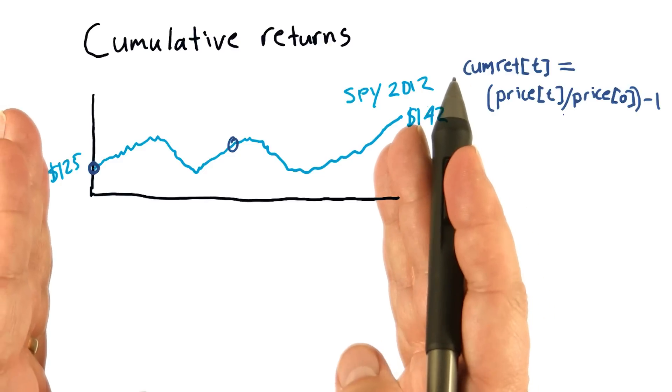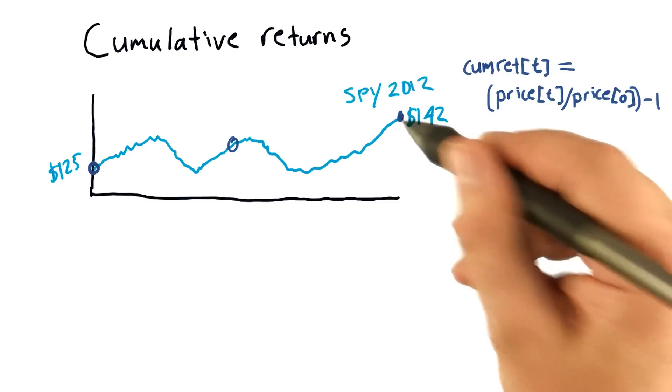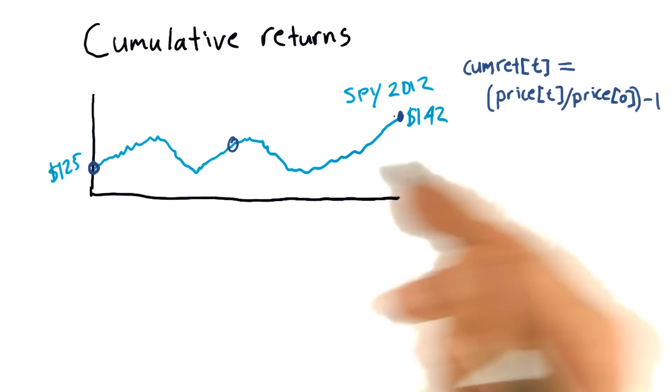Now the cumulative return for the whole period is where T is this last day. So let's consider the example we've got here.